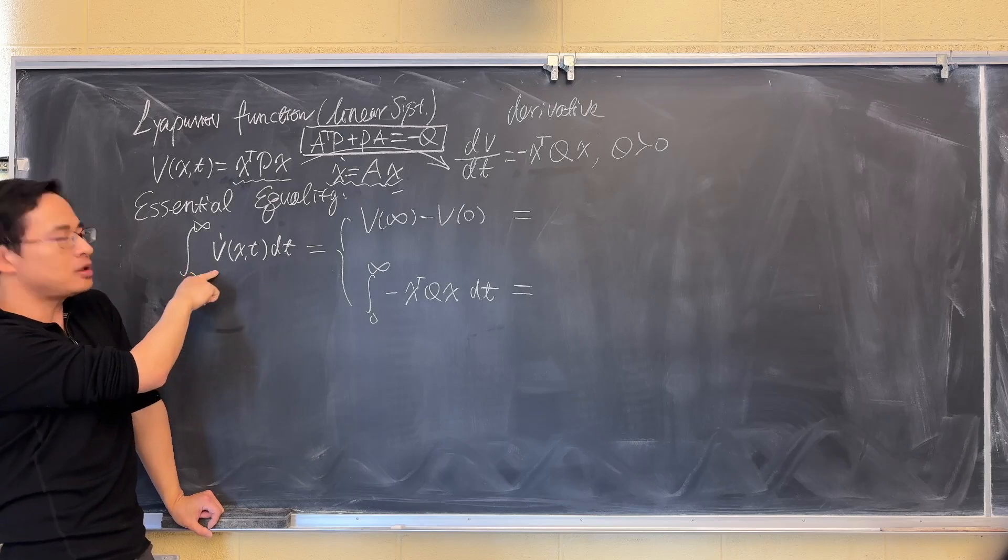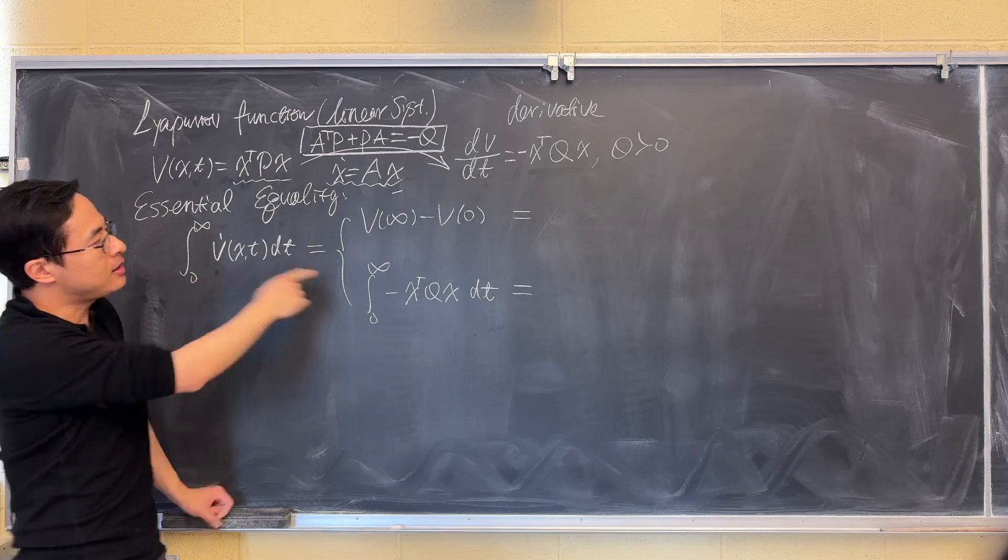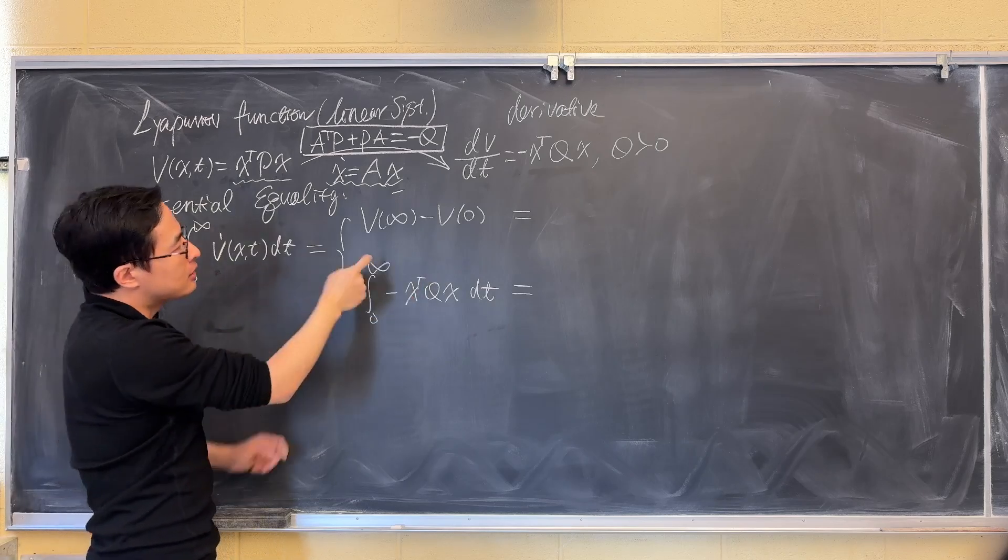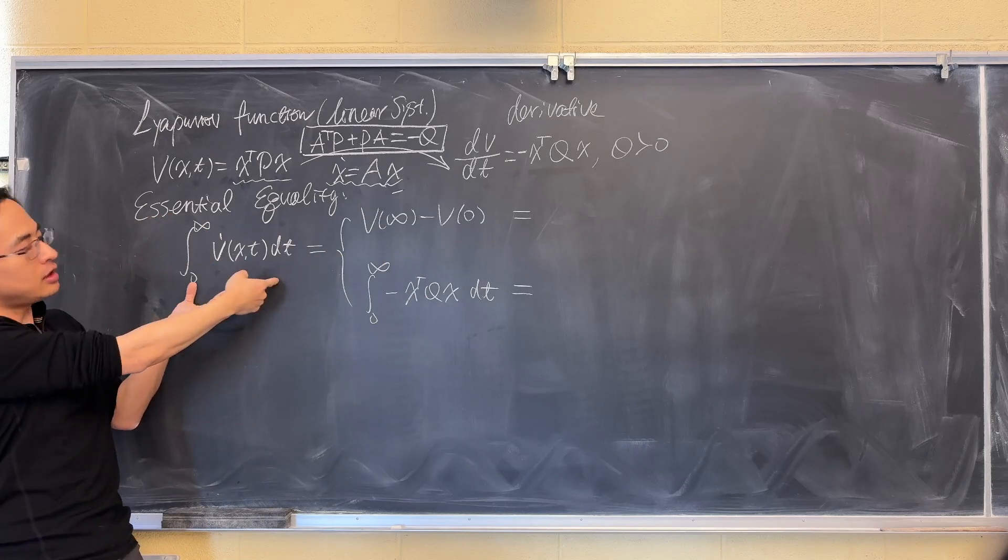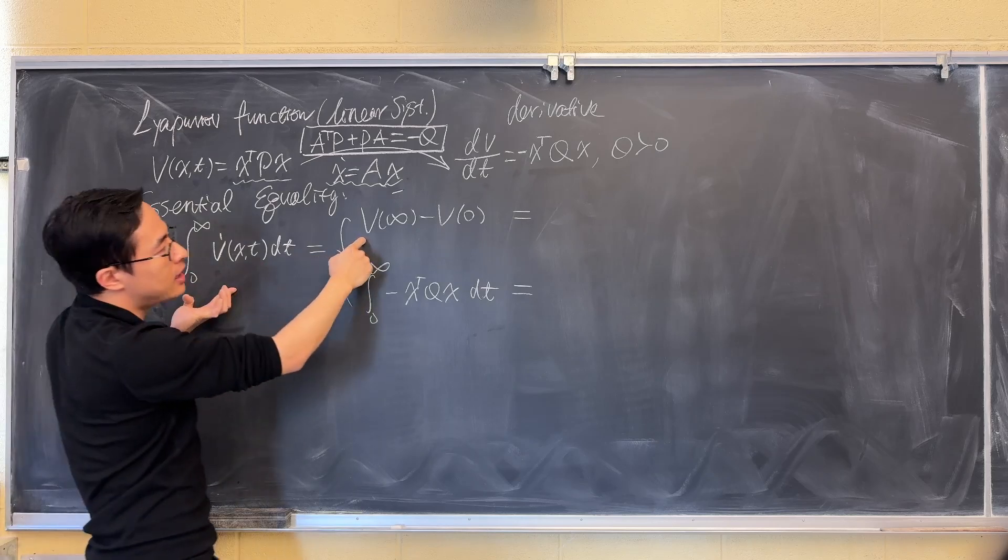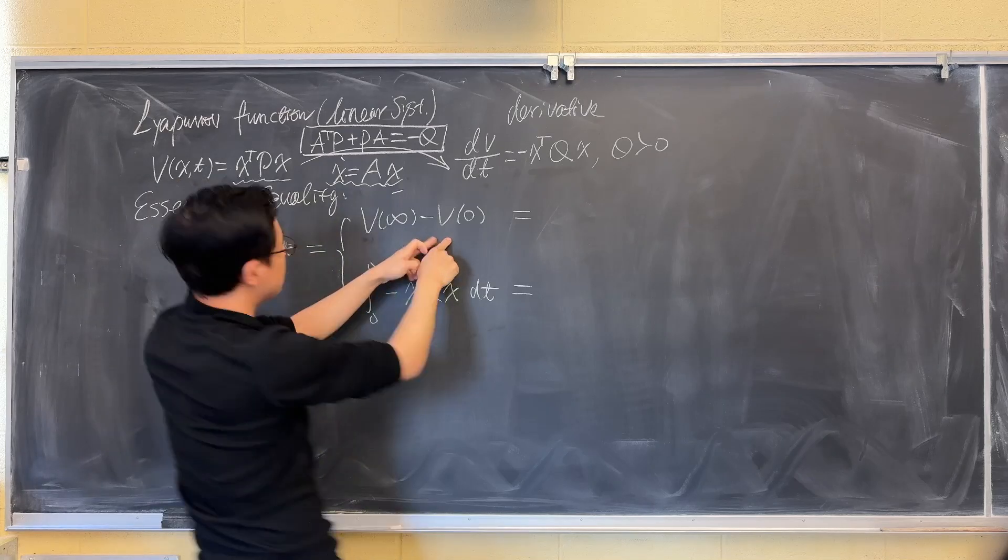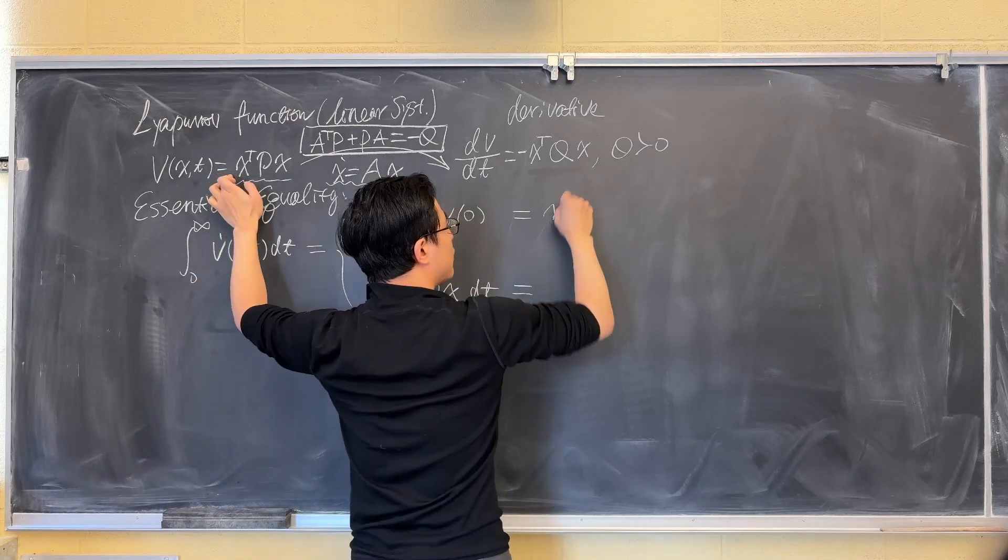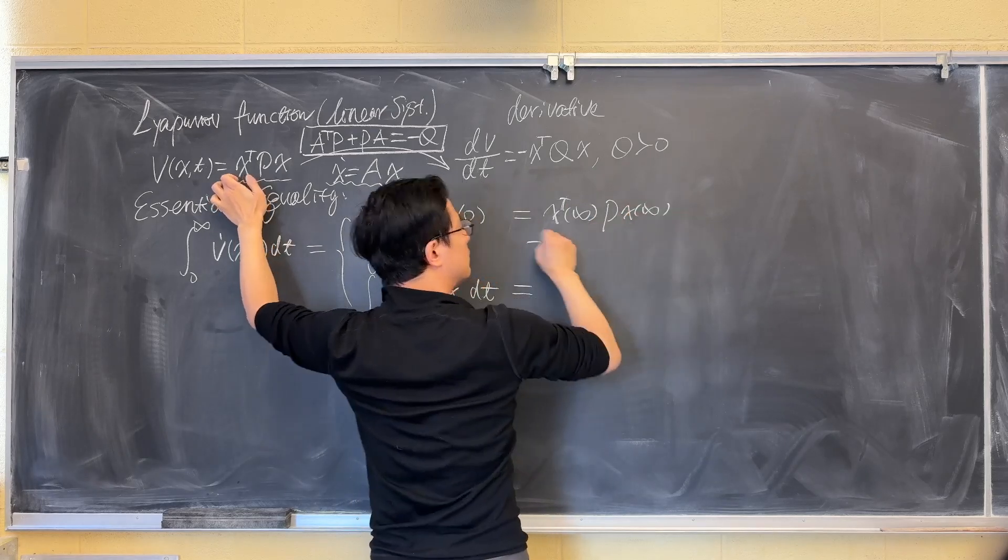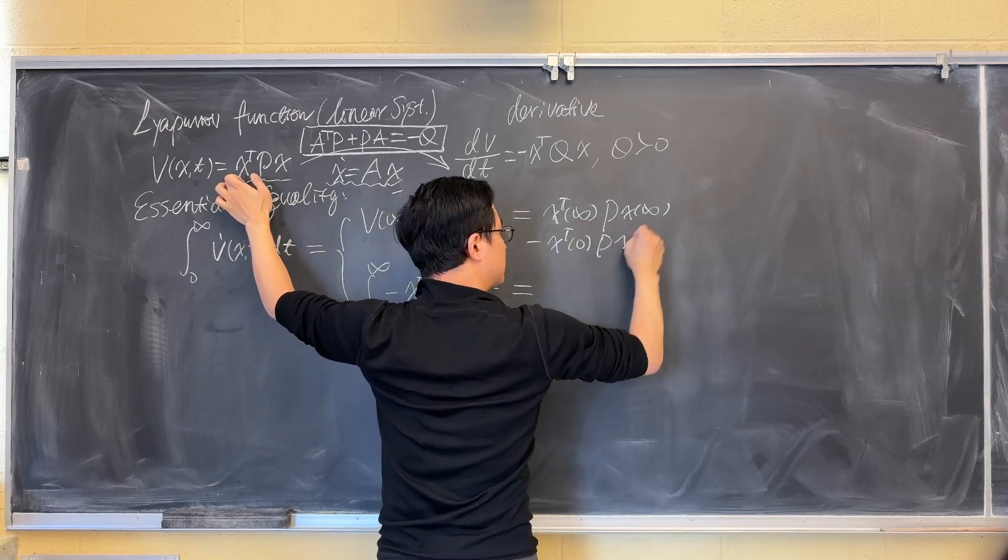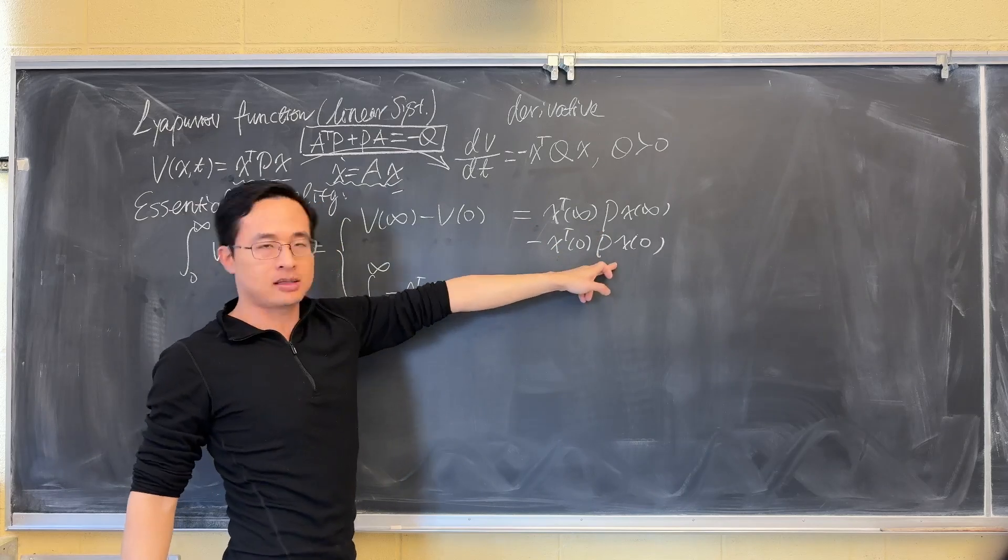If you integrate the derivative of V, then you can evaluate it from two passes. The first pass is, just by looking at the integration, this equality is the same as V at the infinity time minus V at the initial time, which is substituting from the left-hand side is X transpose infinity P X infinity minus X transpose 0 P X 0.